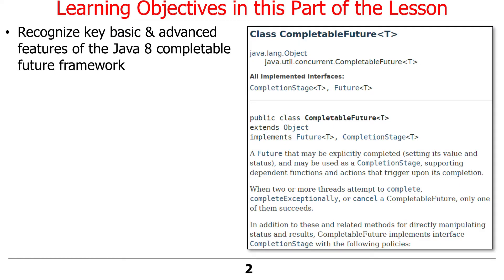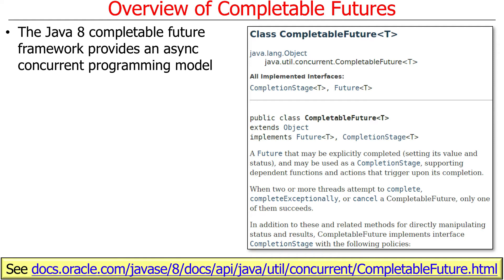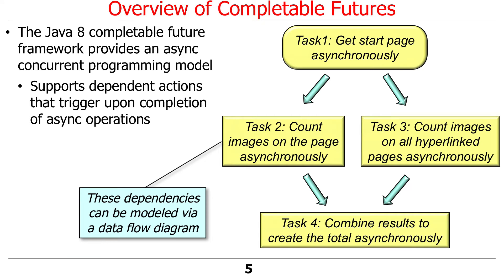Let's talk about completable futures — what they do as opposed to what's lacking in the alternatives. The Java 8 CompletableFutures capability is basically a framework that allows you to have an asynchronous, or so-called reactive, concurrent programming model with Java, which really wasn't quite there with earlier versions. It allows you to have chains of dependent actions that get triggered fluently as asynchronous operations complete, so you can write programs with a data flow-like dependency where later tasks run only when earlier tasks complete.